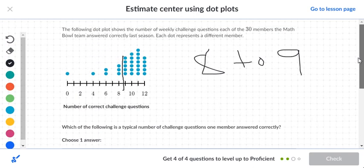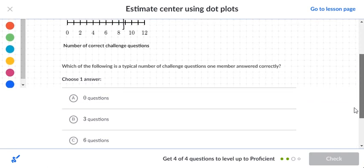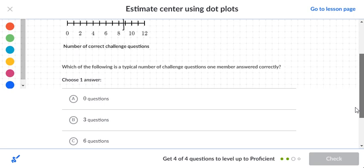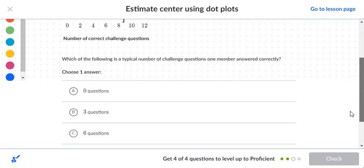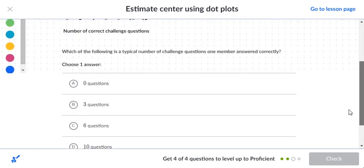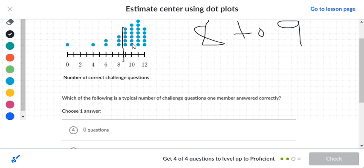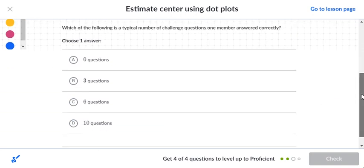So right there we have zero, which is not very good. Three is not good. Six, not good. Ten, I think ten would actually be the better choice because it's out in this area here. Because these numbers here are too small. And besides, ten is closer to the nine.